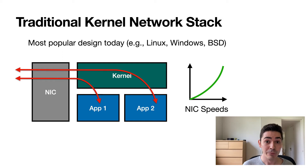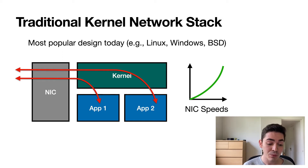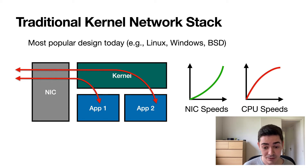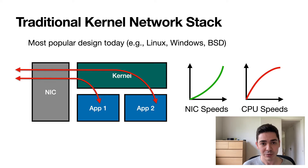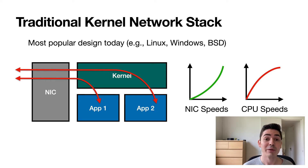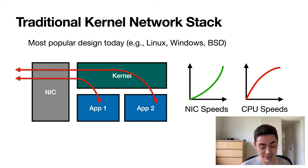While this model worked really well for many decades, in the last 10 years or so, with network speeds growing significantly, CPU performance started to plateau. And as a result, the kernel became a bottleneck to many network applications.